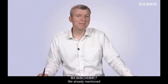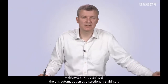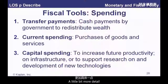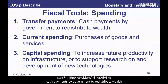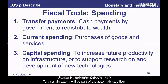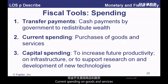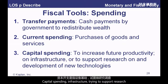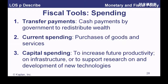The tools of fiscal policy: we've mentioned automatic versus discretionary stabilizers. Transfer payments are cash payments by the government to redistribute wealth — welfare, unemployment, and so on — and are part of the automatic stabilizers. Then we have current and capital government spending: current spending on goods and services, and capital spending on infrastructure, research, new technologies, and green technology. It's a fairly tight set of tools.